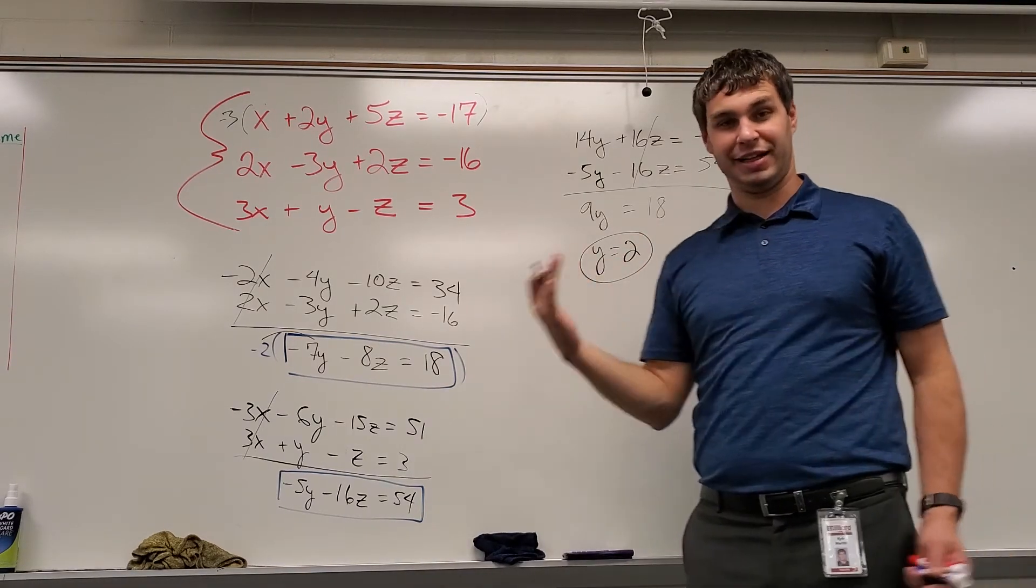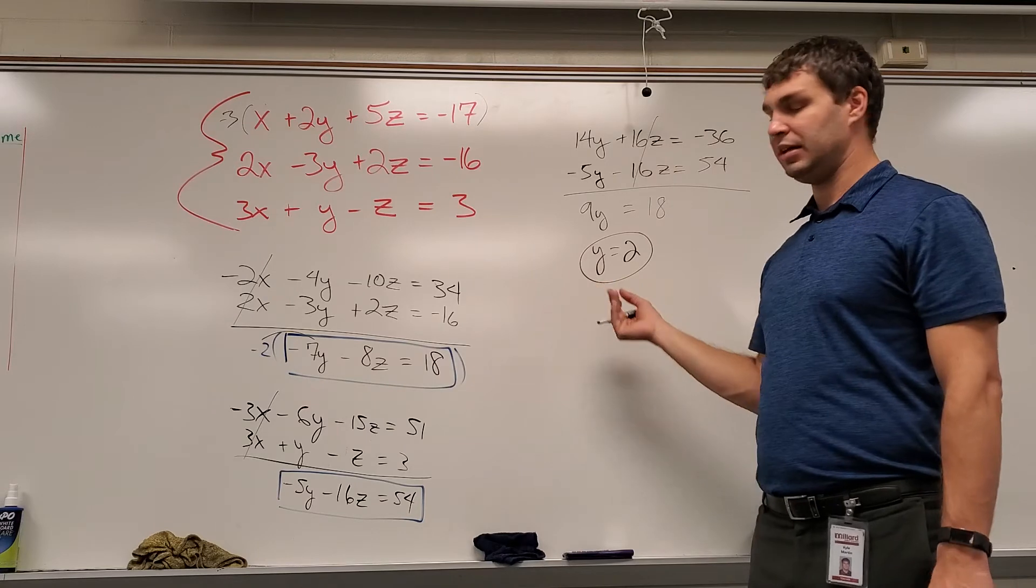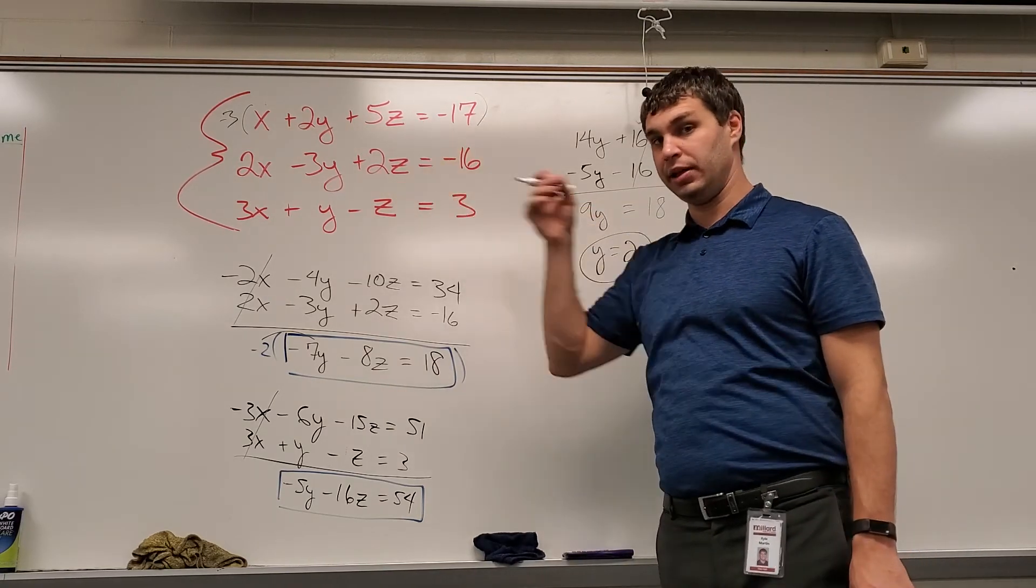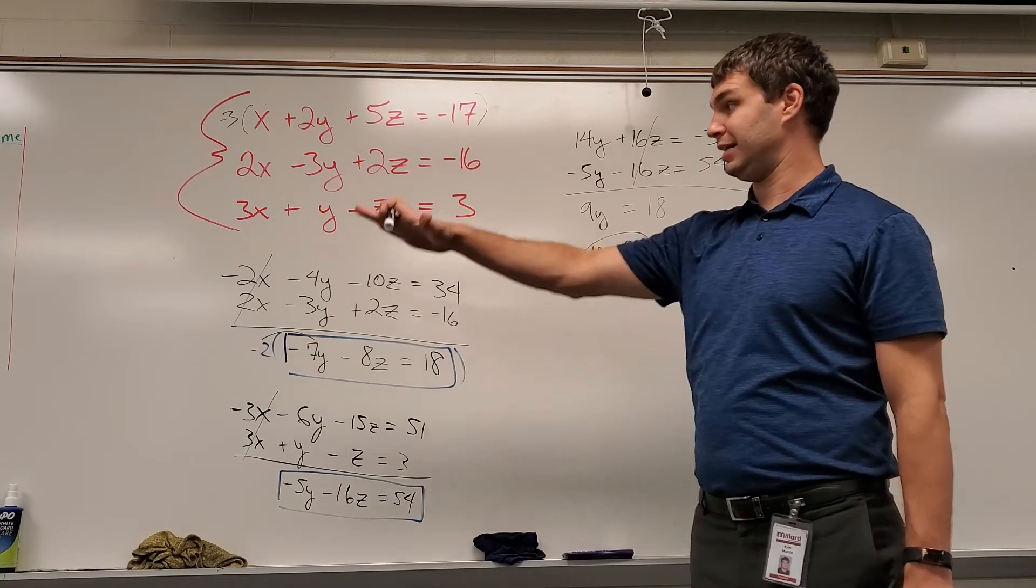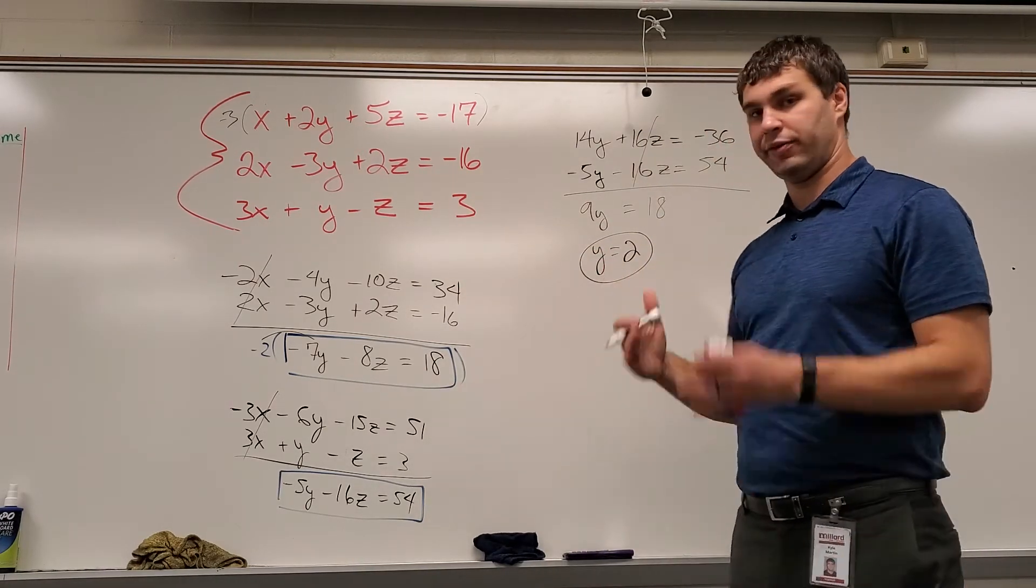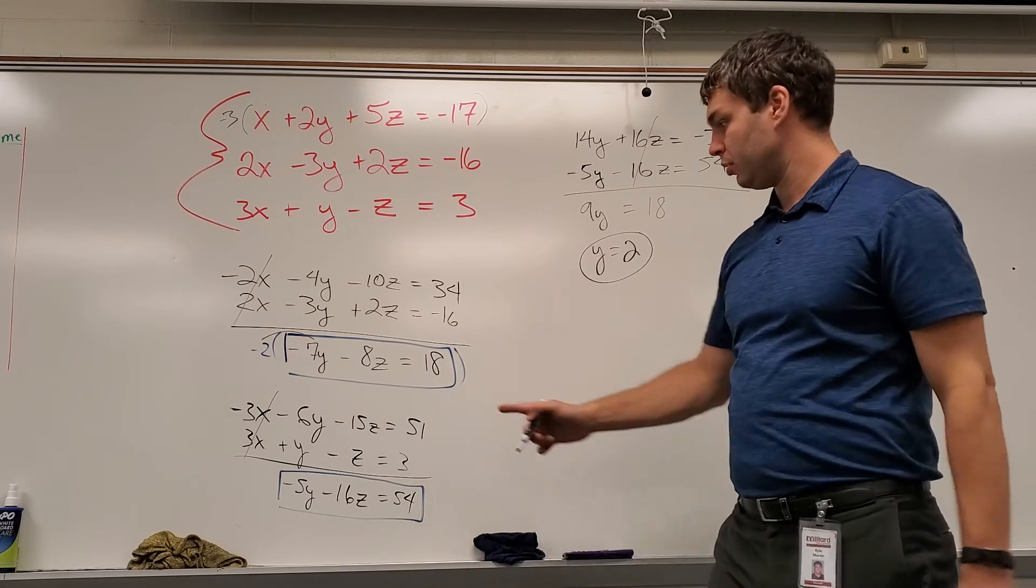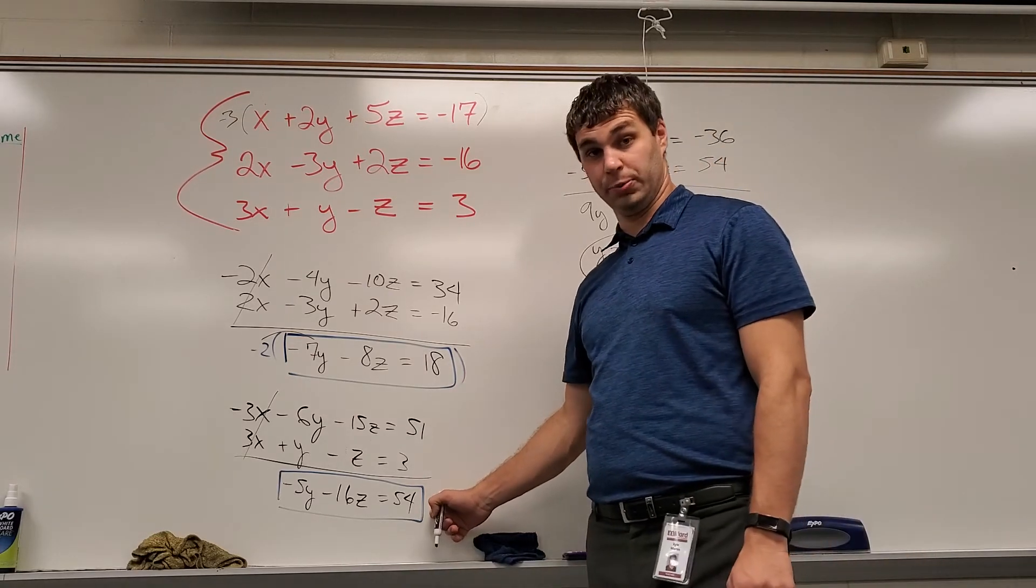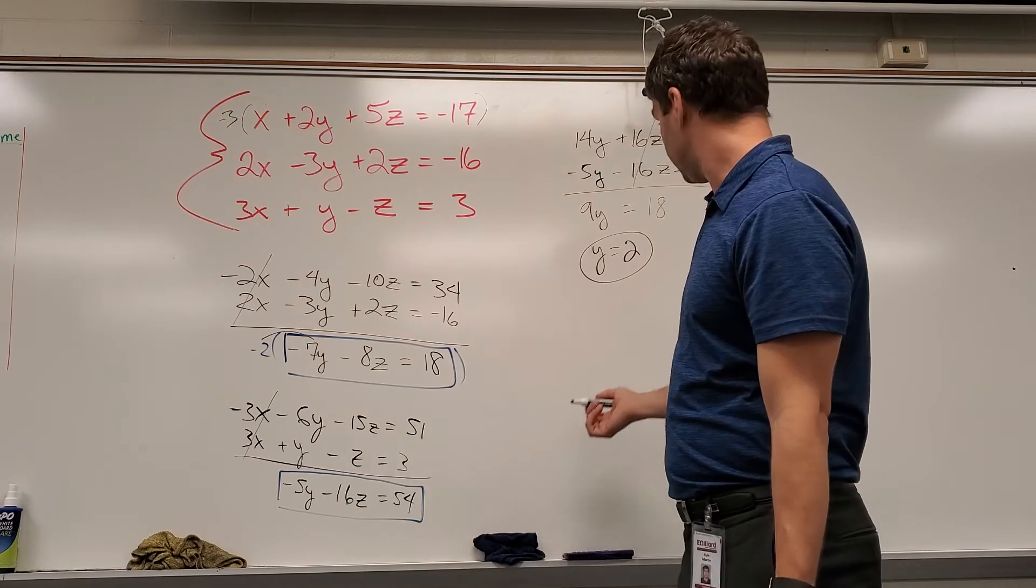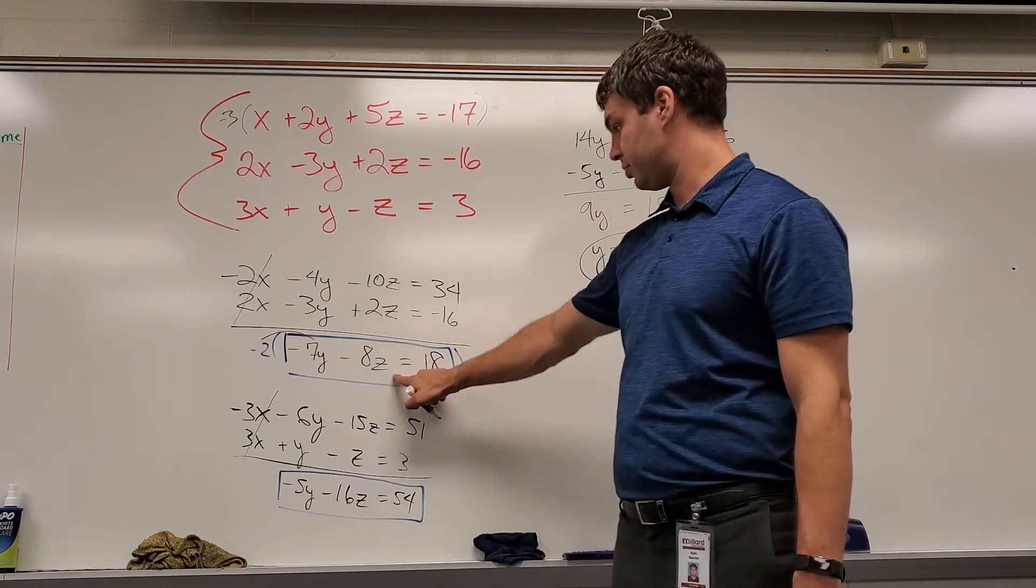All right, so we finally got a variable. We got y is 2. Now, to put this back, we can't just go right back to our original ones in red, because this has an x, y, and a z. I still have two variables I don't know. So I'm going to put it in one where I only have a y and one other variable, which are these two circled in blue. It does not matter which one.